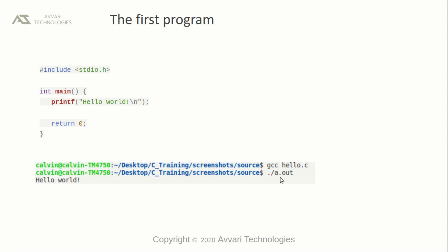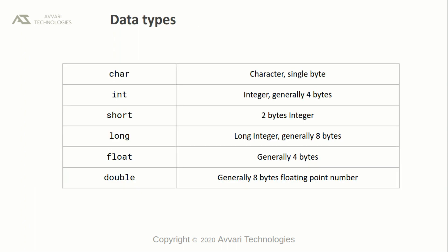Then finally print the output by running the machine executable code. Data types: there are six primitive data types in C language. Those are character, generally one byte, and integer, generally four bytes. This entirely depends on what compiler we are using and it is dependent on the hardware we are using.